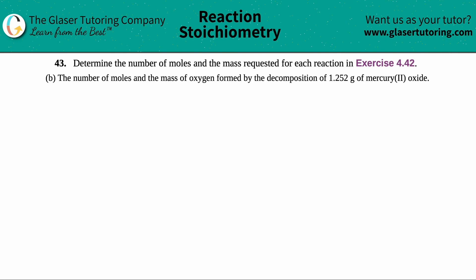Number 43, determine the number of moles and the mass requested for each reaction in exercise 4.42. We have letter B in these exercises. So in this case, we need to find the number of moles and the mass of oxygen formed by the decomposition of 1.252 grams of mercury 2 oxide.